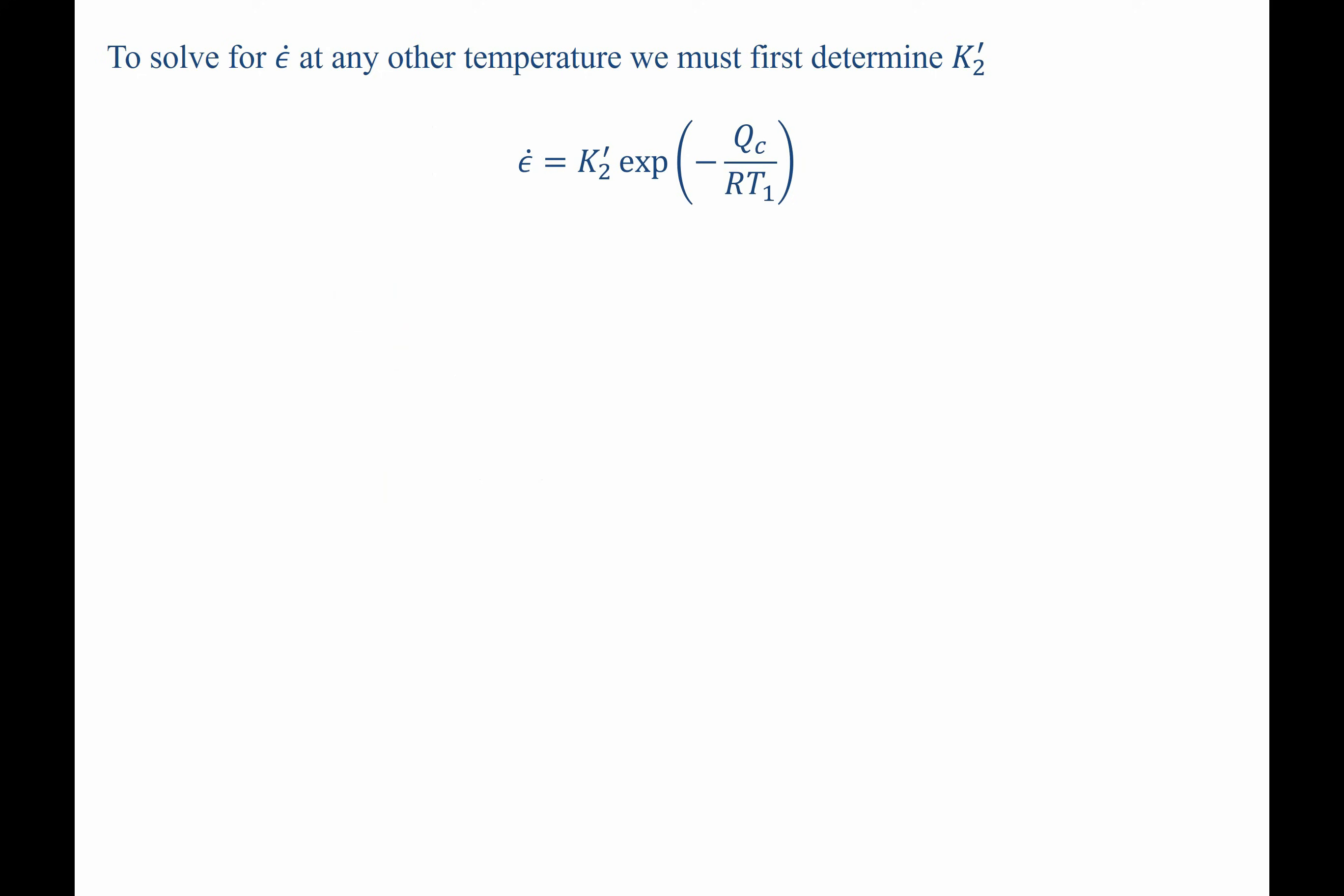So, in order to determine the steady state creep rate at any temperature, we now have to solve for what our pre-exponential factor is, k2 prime. Let's get it alone by dividing both sides by exponential of negative Qc over RT. There's another trick with exponents. If you have 1 over exponential of x, this can be rewritten as exponential of negative x.